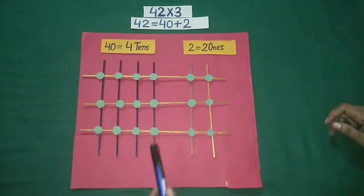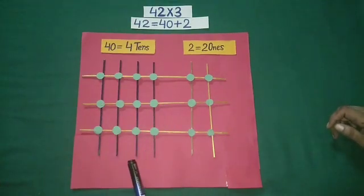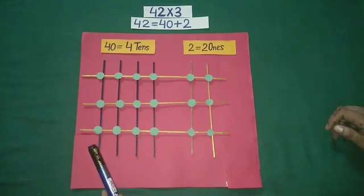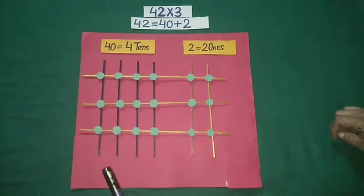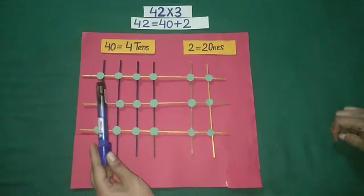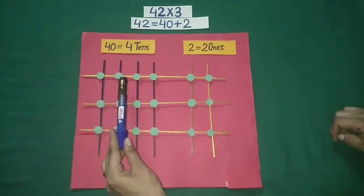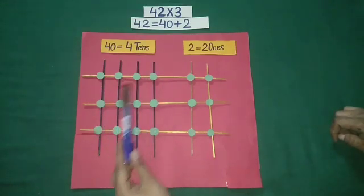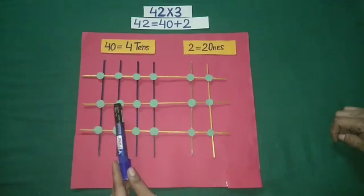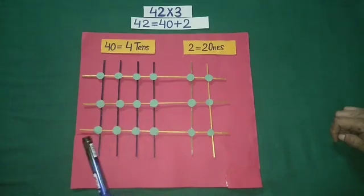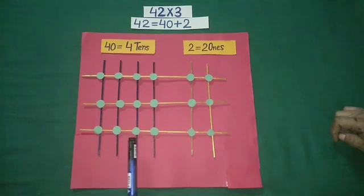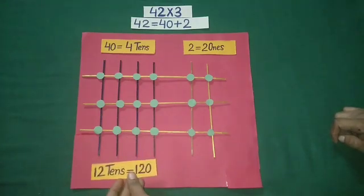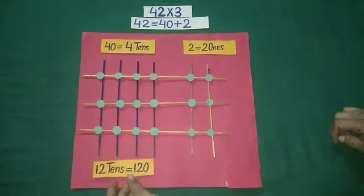Blue sticks represent tens, so each intersection point of blue and yellow stick represents 1 ten. Here we have 1, 2, 3, 4, 5, 6, 7, 8, 9, 10, 11, 12 — that is 12 tens. And 12 tens is equal to 120.